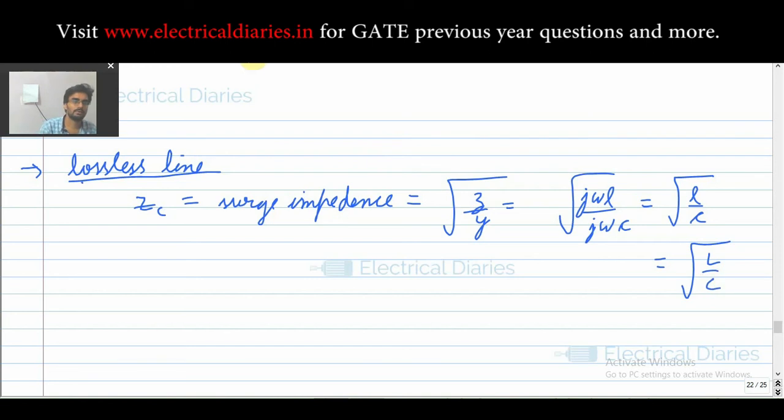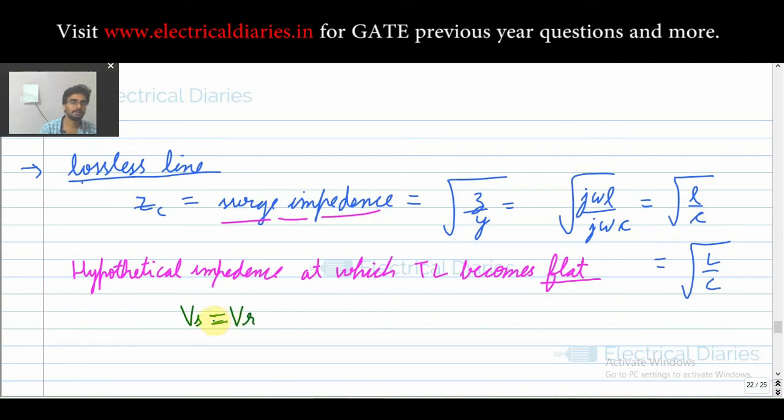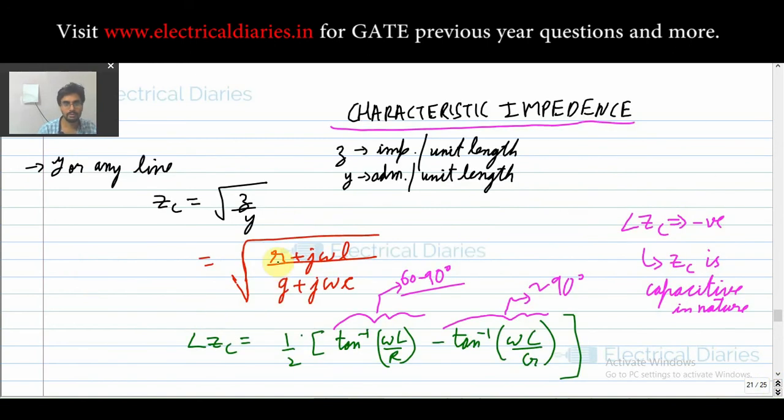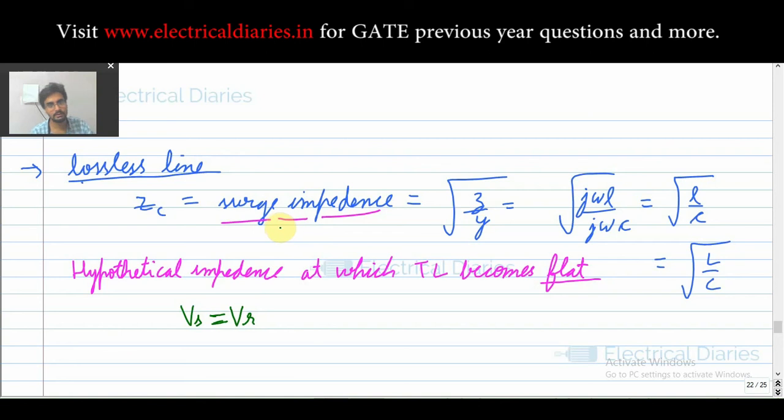Now we'll see what is the significance, why this is so important. We say that surge impedance is a hypothetical impedance at which the transmission line becomes flat. Flat line means that Vs equals Vr. That is the major challenge in power system transmission lines: you have to make your receiving end voltage equal to your sending end voltage. But it is not like that because in a lossy line there will be some voltage drop across the resistance. So we consider a lossless line for simplicity and define this thing as surge impedance.